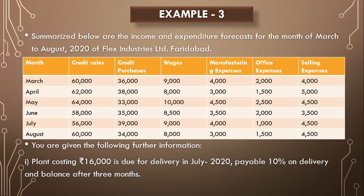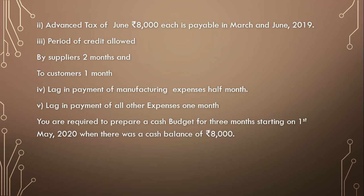The first additional information: a plant costing rupees 16,000 is due for delivery in July 2020, payable 10 percent on delivery and balance after three months. Advance tax of rupees 8,000 each is payable in March and June.